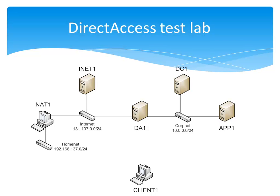Here we see the configuration of the Direct Access test lab. We have four server computers, two client computers, and three subnets. The corpnet subnet is using a private IPv4 address space and is emulating a private or corporate network, also known as an intranet. The internet subnet is using the public IPv4 address space and is emulating the global public IPv4 internet. And the homenet subnet is using a private IPv4 address space and is emulating a single subnet home or small business network environment.